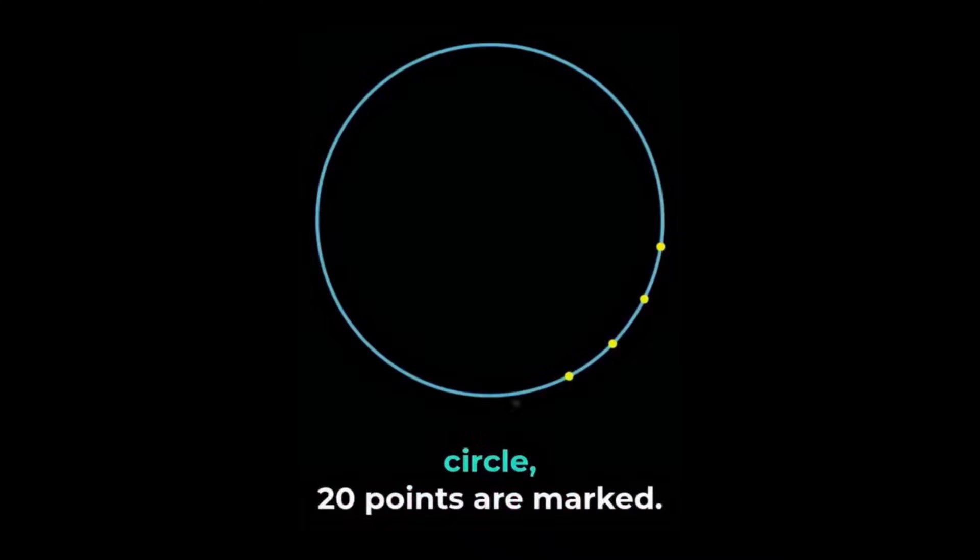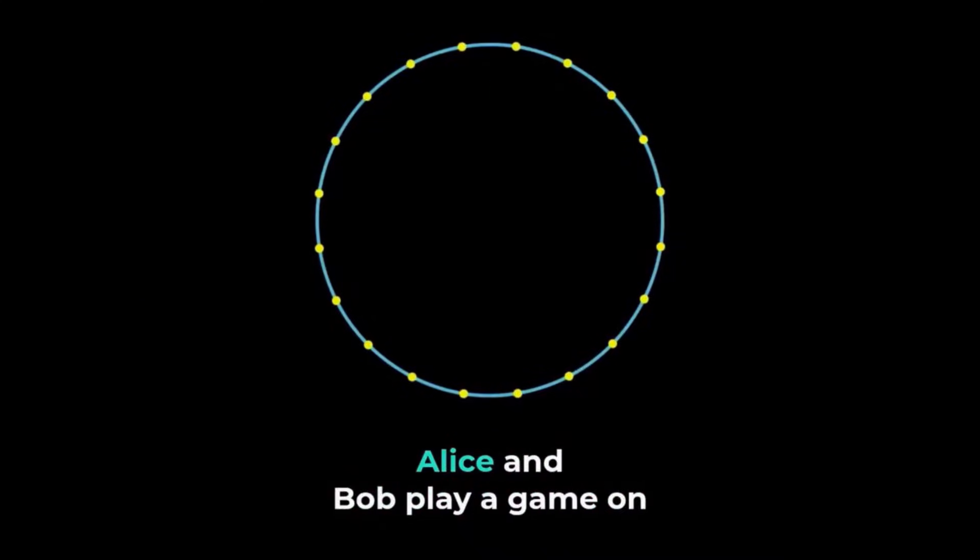On the circumference of a circle, 20 points are marked. Alice and Bob play a game on this circle. In each move, a player must join two distinct points to form a chord. But the chord cannot intersect any existing chord strictly inside the circle.